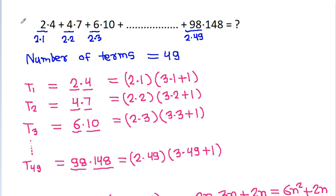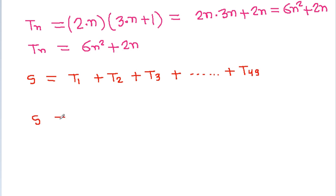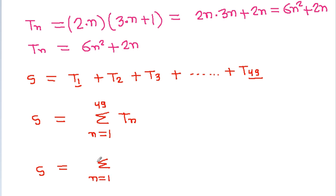Suppose the sum is equal to S. Then S equals T1 plus T2 plus T3 plus up to T49. So S equals the summation of Tn from n equals 1 to 49, where Tn is 6n² plus 2n.